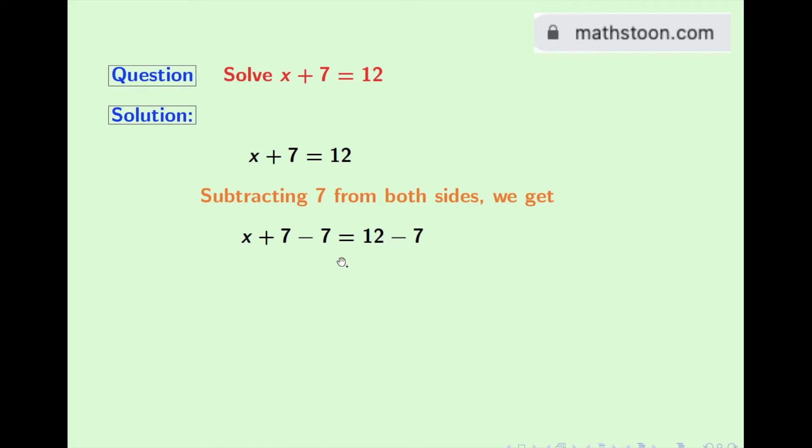Look that in the left hand side, we have 7 minus 7, which is 0. So after simplification, we have only x in the left hand side.